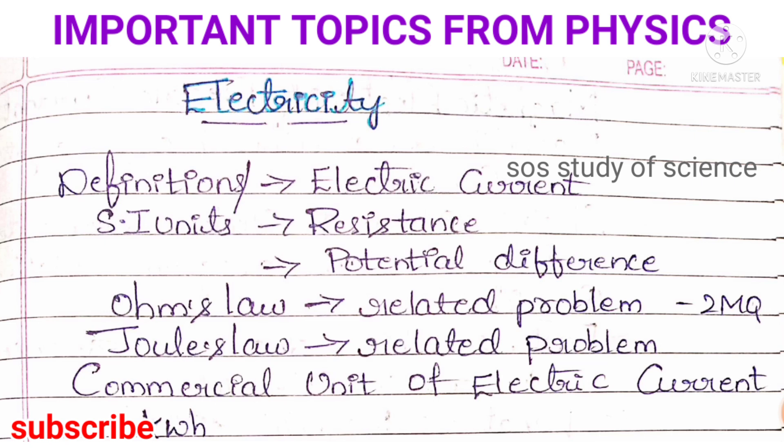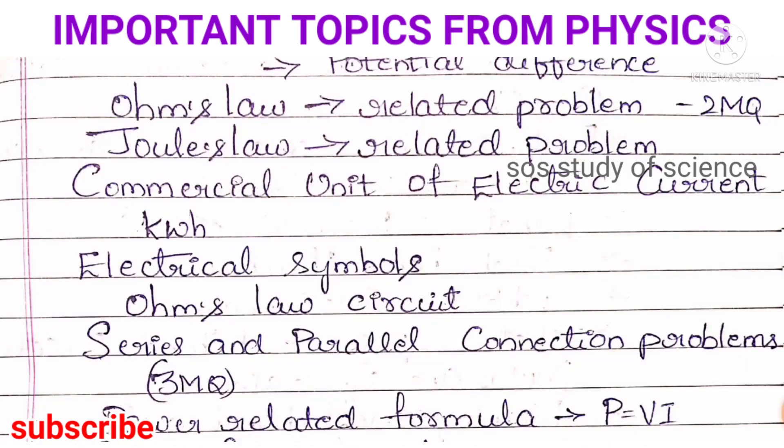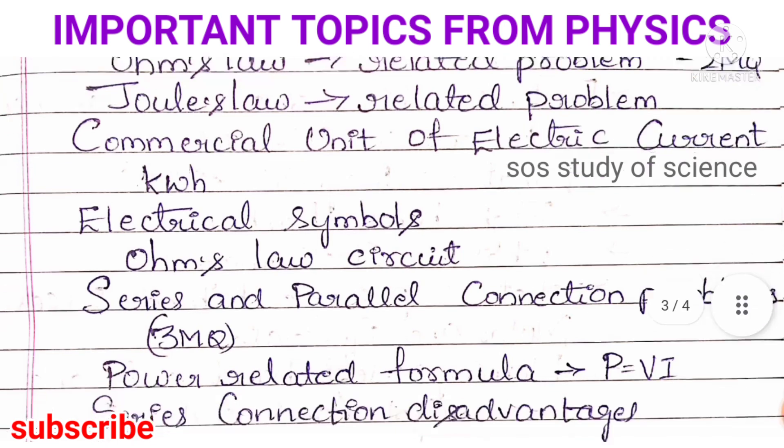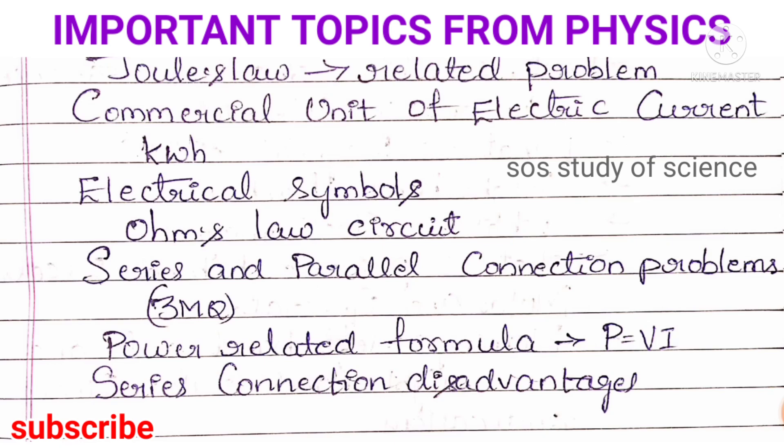You have to know the commercial unit of electric energy — kilowatt hour. You must know this concept. Note down the electrical symbols and the Ohm's law circuit diagram, which is very important. For series and parallel connection, you can expect problems for three marks. They can give certain numbers connected in series or parallel and ask you to find out the values, or ask the difference between these two. Do learn the problems related to series and parallel connection. Also learn the power related formula: P equals VI.